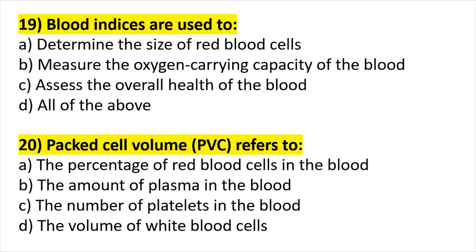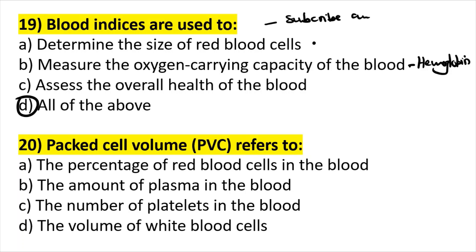Question nineteen: blood indices are used to determine the size of red blood cells, measure the oxygen-carrying capacity of blood, and assess the overall health of the blood — all of the above. Blood indices will look at hemoglobin to measure oxygen-carrying capacity. Subscribe and register for a dedicated video explaining blood indices in detail.